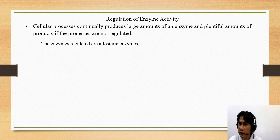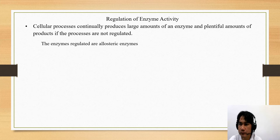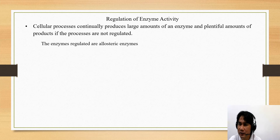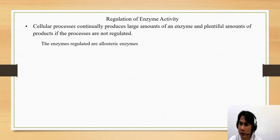Next is regulation of enzyme activity. Cellular processes would continually produce large amounts of enzyme and plentiful amounts of products if the processes are not regulated. The process by which enzymes act must be regulated; otherwise, energy will simply be wasted. The types of enzymes that are regulated are the allosteric enzymes.